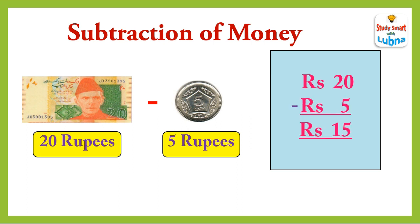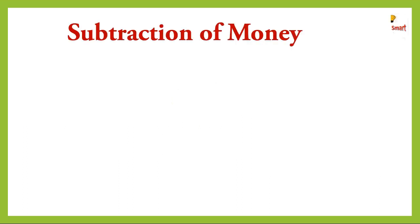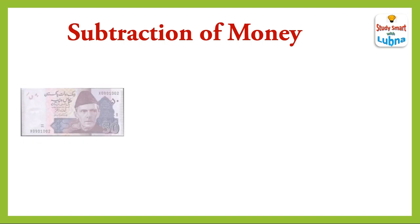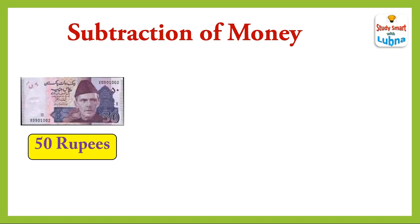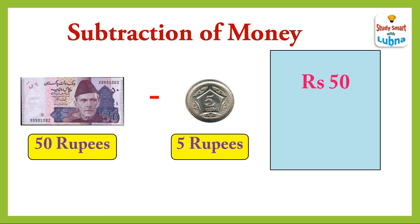Twenty rupees note minus five rupees coin — when we subtract rupees five from rupees twenty, we will get rupees fifteen. Fifty rupees note minus five rupees coin — when we subtract rupees five from rupees fifty, we will get rupees forty-five.